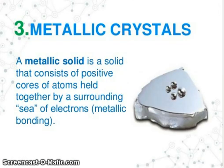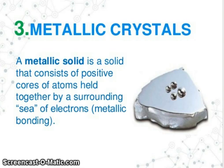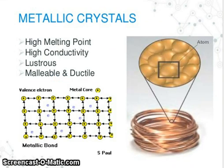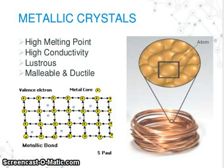Now, metallic crystals: a metallic solid is a solid that consists of positive cores of atoms held together by a surrounding sea of electrons — metallic bonding. Properties of metallic crystals include: high melting point, high conductivity, high lustre, malleable and ductile, with valence electrons, metal core, and metallic bond.